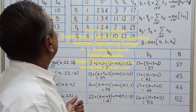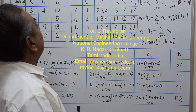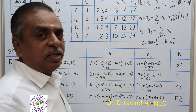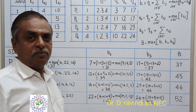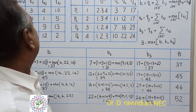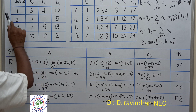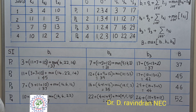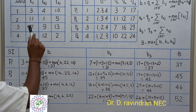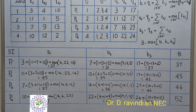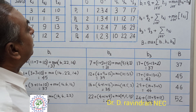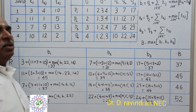Welcome everybody. Now we are going to learn about the Branch and Bound algorithm for n-job n-machine flow shop problems with some numerical illustration. Let us consider a small numerical problem consisting of three machines and four jobs, where the processing times are given for each job on each machine.